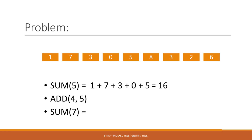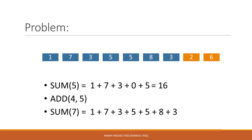And then we want to compute the sum of the first seven numbers. The first seven numbers are 1, 7, 3, 5, 5, 8, 3. Notice that we don't have the 0 anymore — the 0 is now a 5. And the sum of these seven numbers is 32.